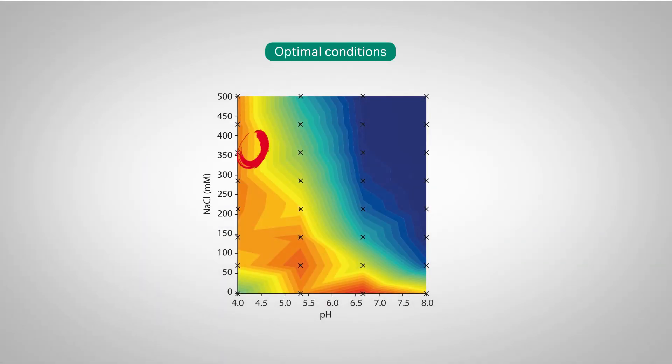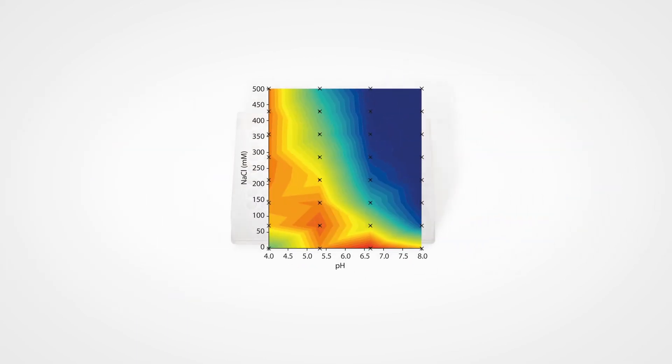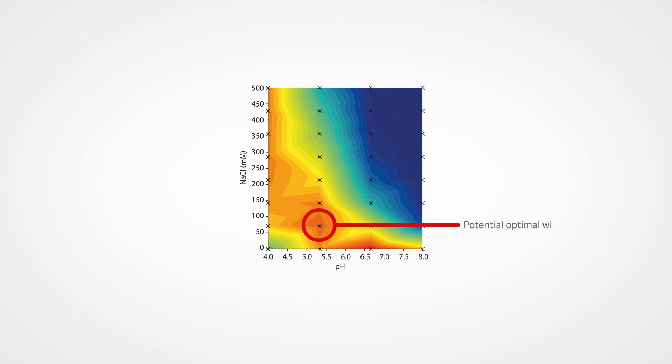It can be challenging to find optimal conditions for the process. Micro-well filter plates or mini-columns run in parallel allow for rapid screening of a large number of conditions, and different software are available to facilitate interpretation of the results.